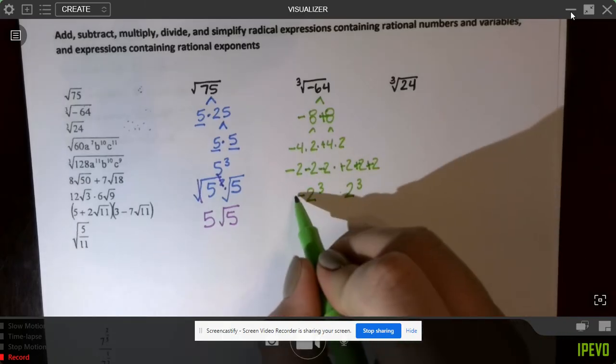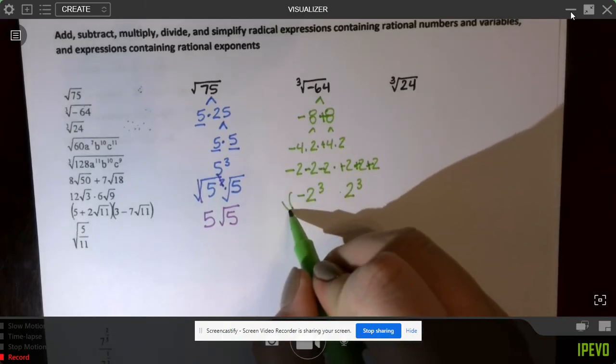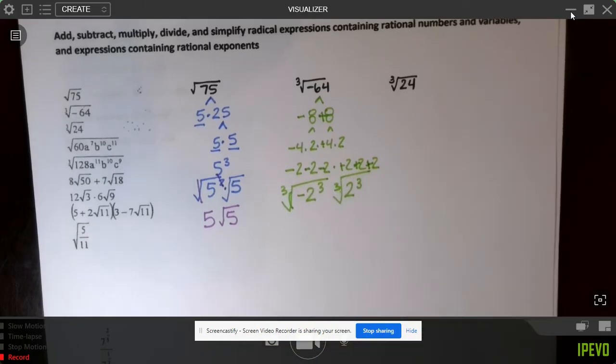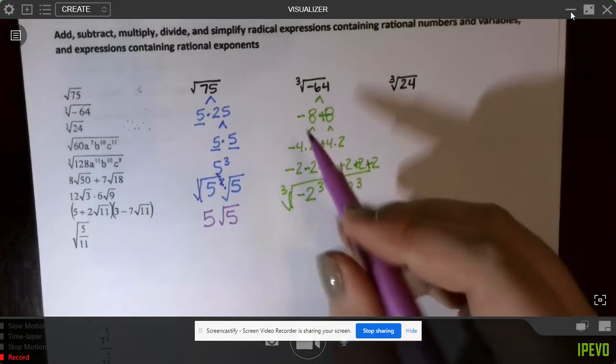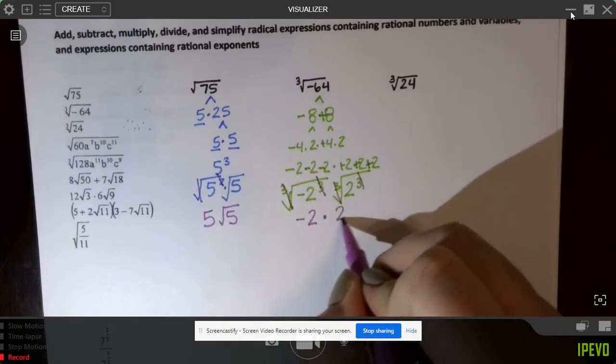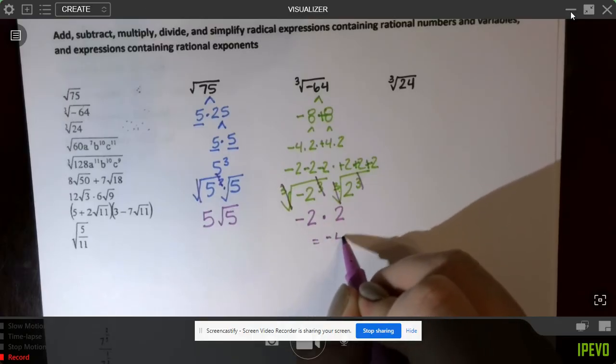So I can take a negative 2 out from my radical, and I can take a positive 2, because those are going to cancel. So I've got a negative 2 and a positive 2, or just a negative 4.